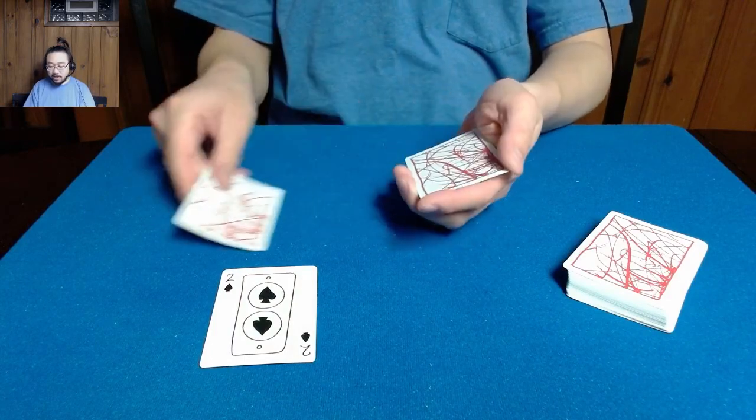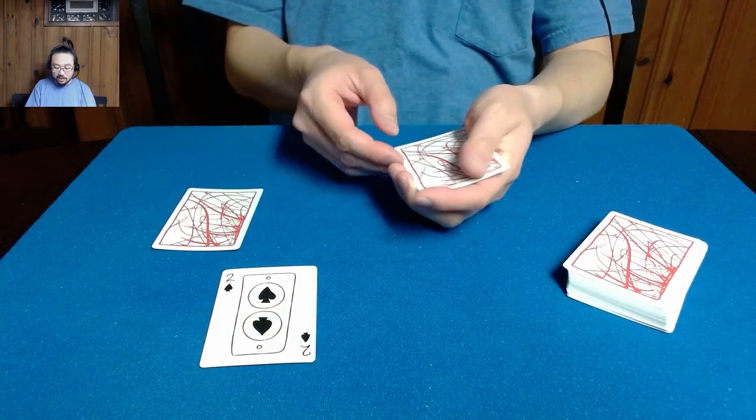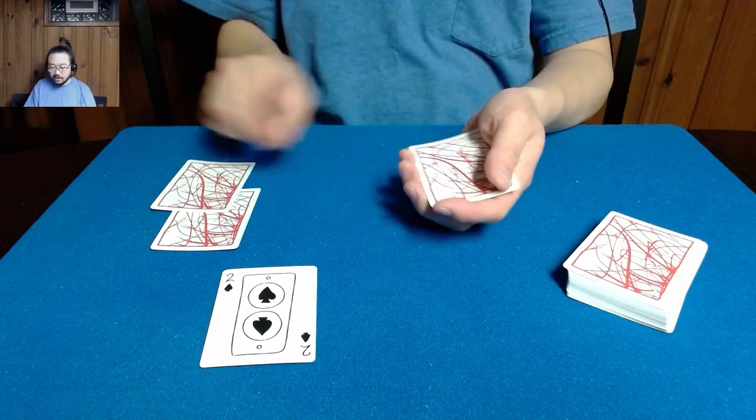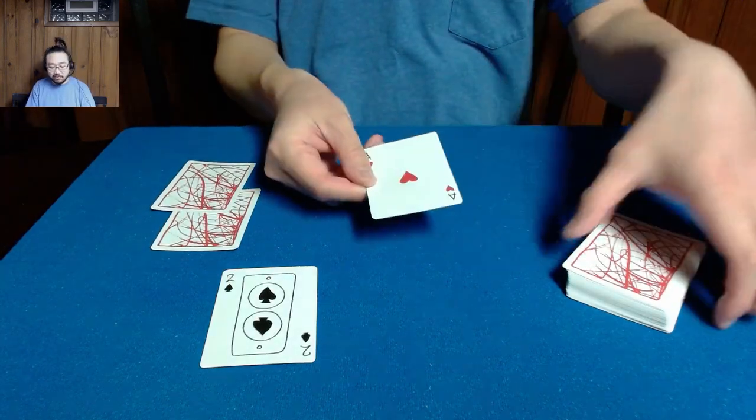And what we're going to do is set aside these cards. So we'll place the three right here. We're going to place the two over here. And then we're going to place the ace on top of the deck.